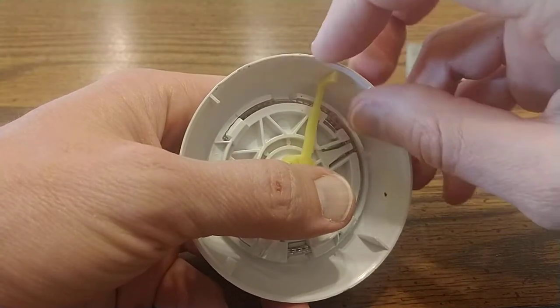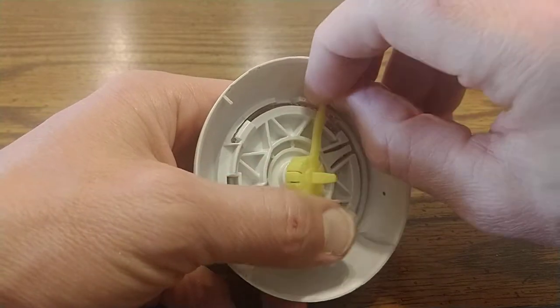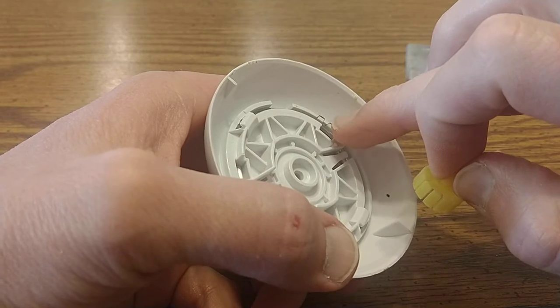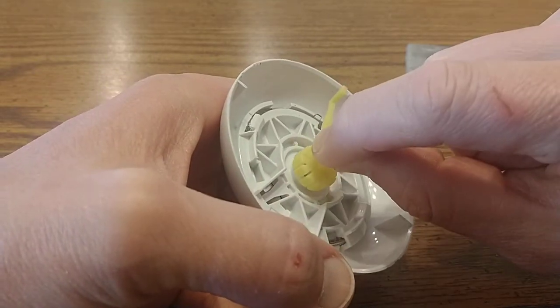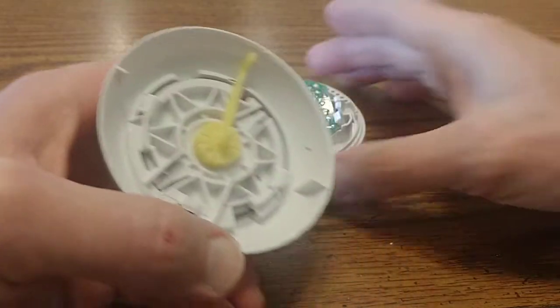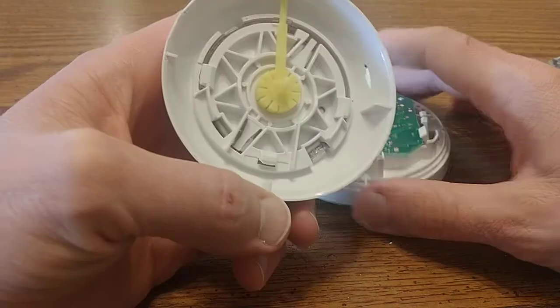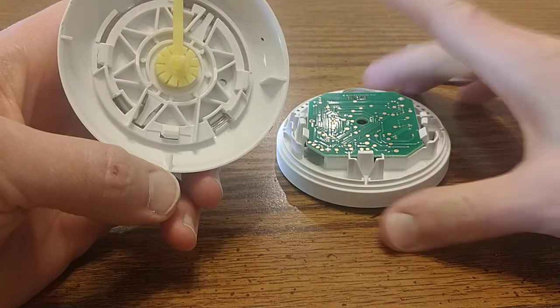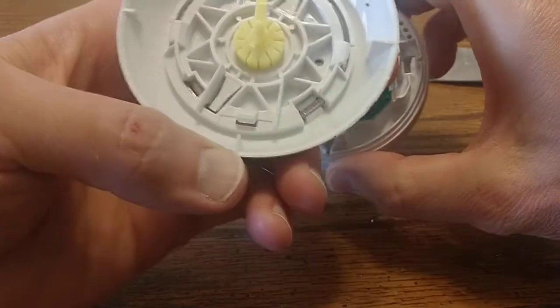You see that little... It's hard to see in the camera. Right there that plastic thing that's got the notch. That goes in it like that. And then you've got these three tabs here that go into these three grooves.